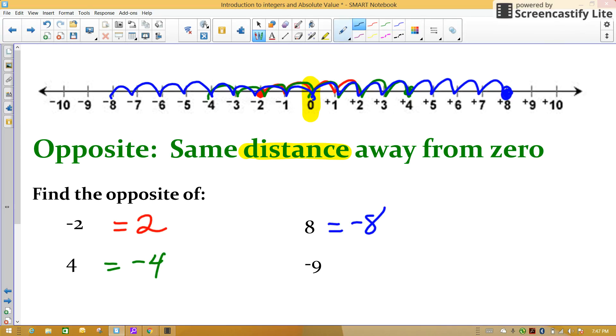That's right. Negative 8. 1, 2, 3, 4, 5, 6, 7, 8. Find negative 9. How many spaces is negative 9 from zero? That's correct. 9. What number is 9 spaces to the right of zero? 1, 2, 3, 4, 5, 6, 7, 8, 9. Positive 9.